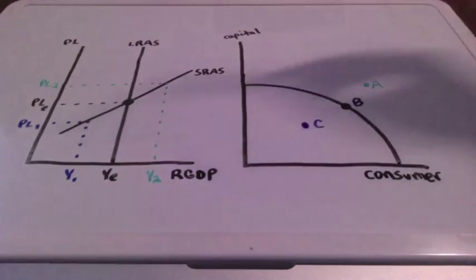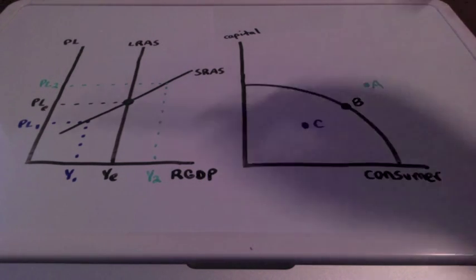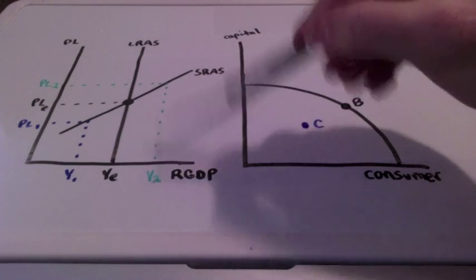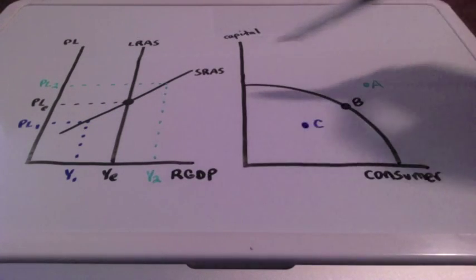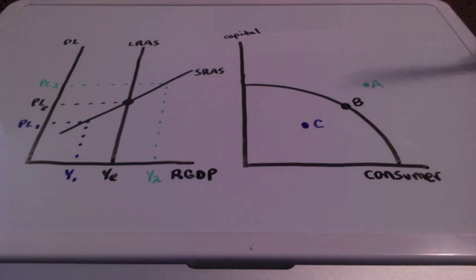If we have new resources, which would place us outside of the production possibilities curve, this would represent price level 2 and GDP 2. This would represent letter A on the production possibilities curve.